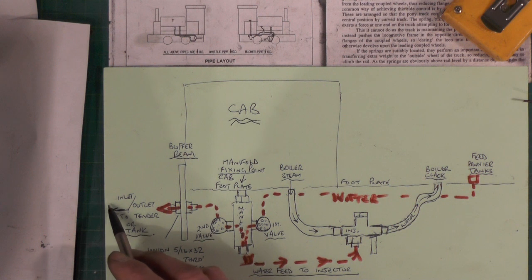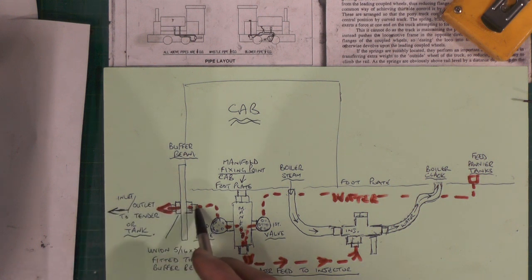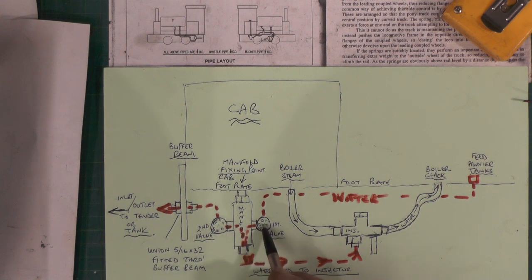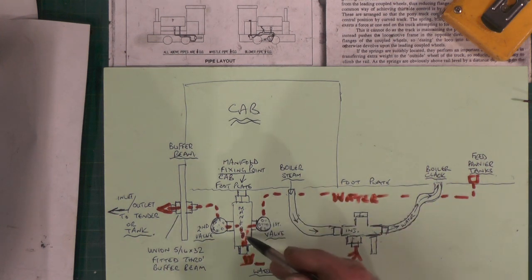The feed from the tender or the tank on my riding car is going to come in this way to this second valve. So depending which valve I have open, I'll be using water from two sources, and that's going to feed out the bottom of the manifold.